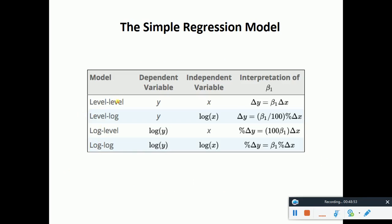To recap: level-level is when both variables have no log. Level-log means log is on the x variable. Log-level means log is on the dependent variable. Log-log is when both variables are in log form. I prefer the log-log model because the coefficient is directly the elasticity, and both variables become normalized.